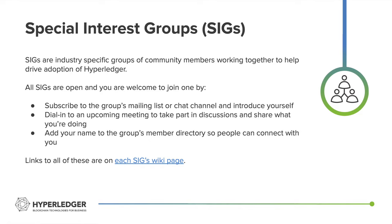To get involved in a special interest group, it is an open process and you are welcome to get involved by subscribing to a group's mailing list or chat channel and introducing yourself, dialing in to an upcoming meeting to take part in discussions and to share what you're doing. Many groups also have a group directory on their wiki pages so that you can get introduced to other people in that group.